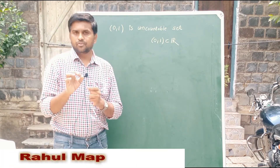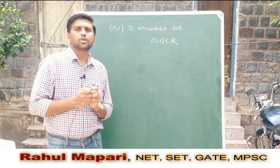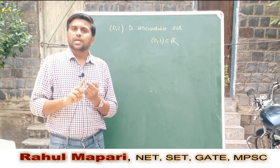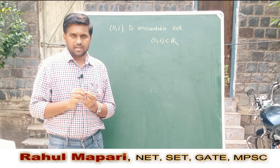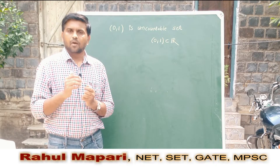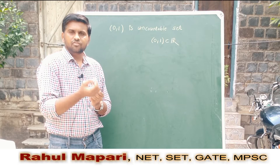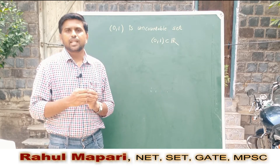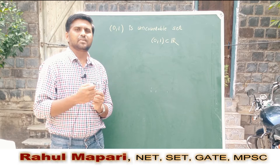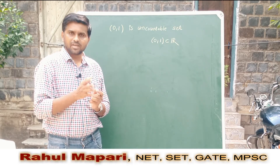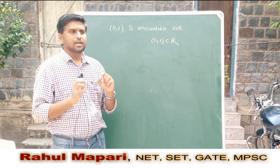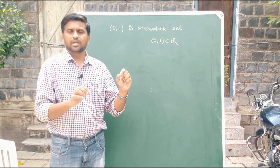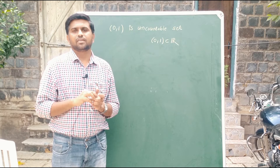First of all we should know about countable sets. A set is countable if we can count the elements — that is, if we can say this is the first element, the second element, the third element, and so on. Equivalently, if we can label the elements corresponding to natural numbers, like a, b, c, d where a is the first element and b is the second, then that set is countable.